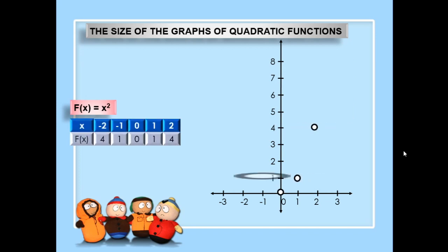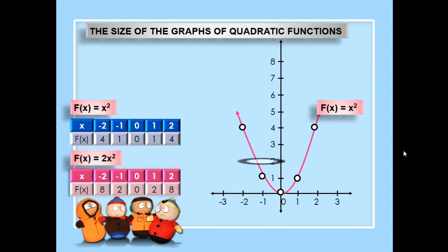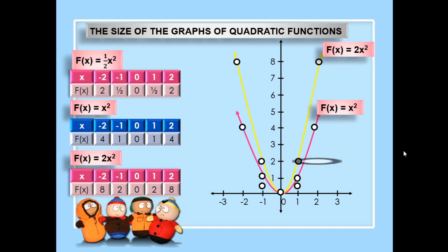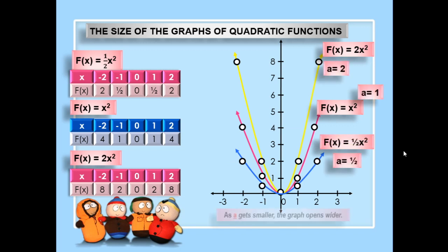Here we have the graph of the function defined by x squared, denoted by the pink curve. Another graph of the function defined by 2x squared is shown in the yellow curve. And the third function defined by one-half x squared is shown in the blue curve.